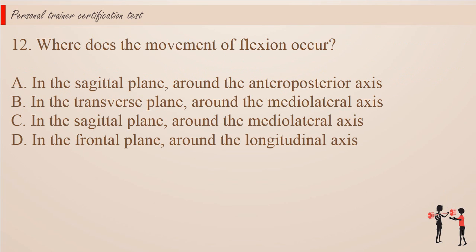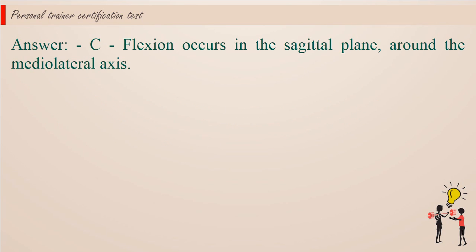Question 12. Where does the movement of flexion occur? a. In the sagittal plane, around the anteroposterior axis. b. In the transverse plane, around the medial lateral axis. c. In the sagittal plane, around the medial lateral axis. d. In the frontal plane, around the longitudinal axis. Answer: c. Flexion occurs in the sagittal plane, around the medial lateral axis.